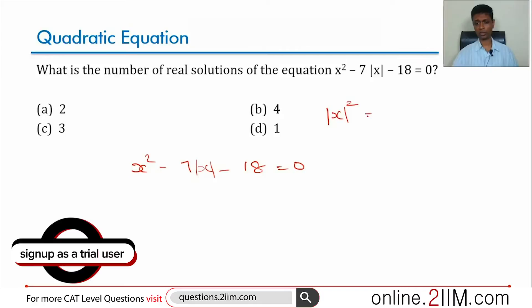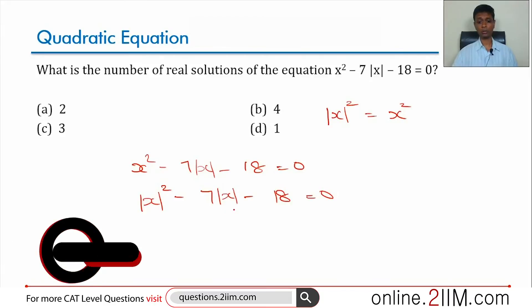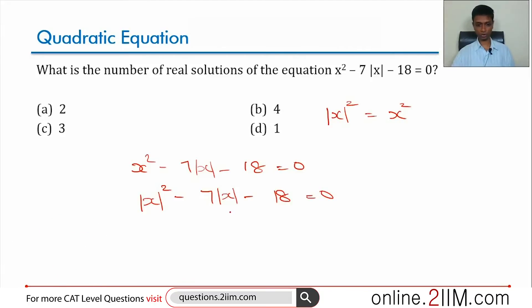Mod x the whole square is nothing but x square. This quadratic expression can be treated as a quadratic in mod x. So mod x whole square minus 7 mod x minus 18 equal to 0.